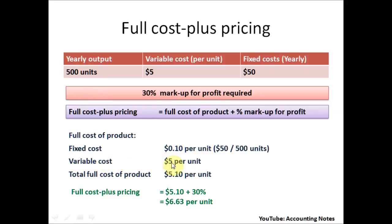The variable cost is $5 per unit. Adding the $5 variable cost and the $0.10 fixed cost per unit gives a total full cost of $5.10 per unit.